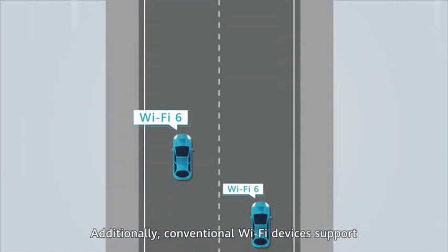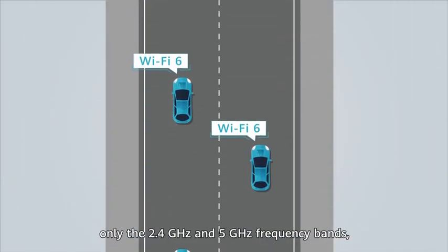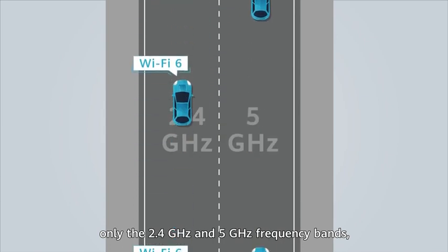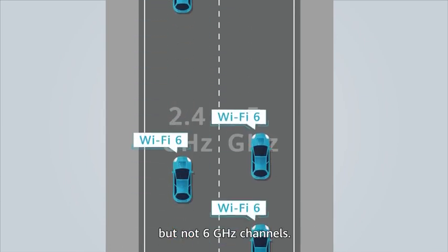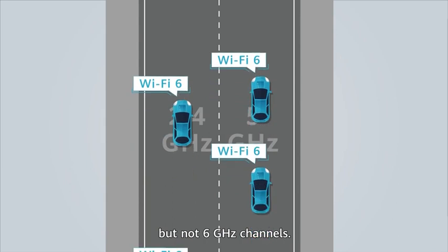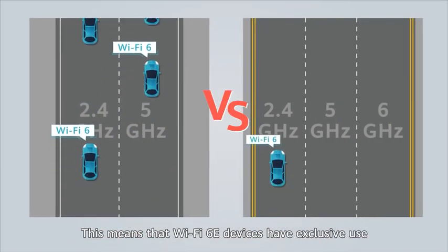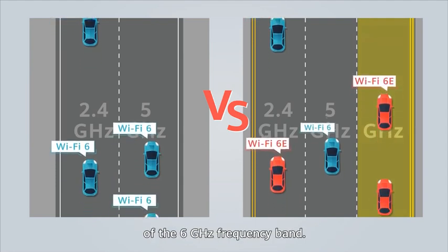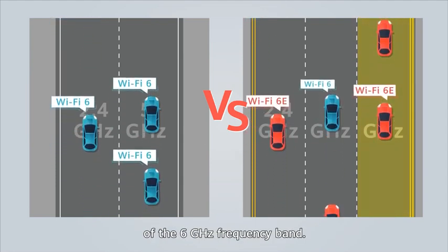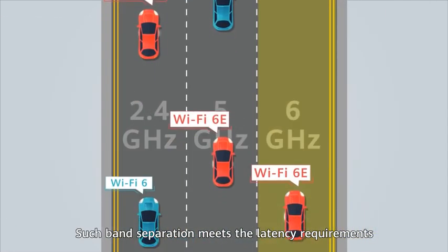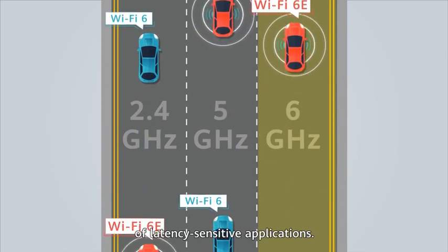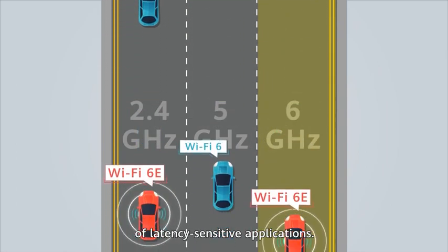Additionally, conventional Wi-Fi devices support only the 2.4 GHz and 5 GHz frequency bands, but not 6 GHz channels. This means that Wi-Fi 6E devices have exclusive use of the 6 GHz frequency band, and such band separation meets the latency requirements of latency-sensitive applications.